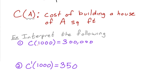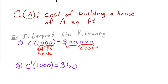We have two situations: c(1000) and c'(1000). What c(1000) tells me is that if I want to build a one-thousand-square-foot house, it's going to cost three hundred thousand dollars to build. That one is pretty straightforward.